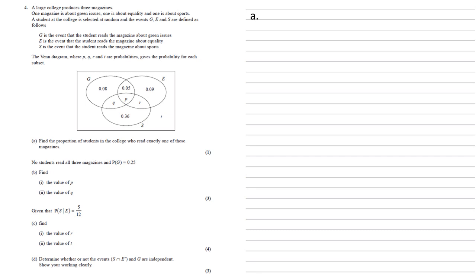For part A we need to find the proportion of students in the college who read exactly one of these magazines. So to do this we've got the 0.08, these are people who just read the green issues magazine. The 0.09 is the ones who just read the magazine about equality and the 0.36 is the students that just read the magazine about sports. So to find everybody who reads exactly one magazine we're just going to add those three together to give us an answer of 0.53.